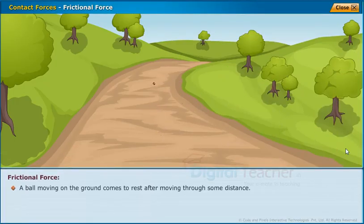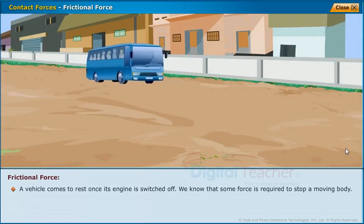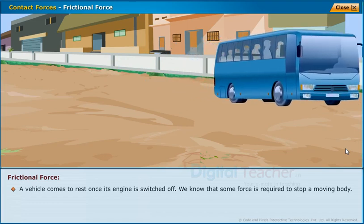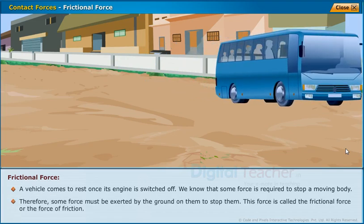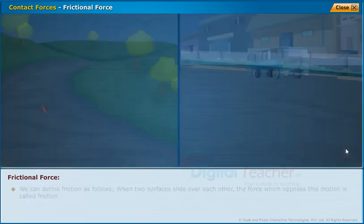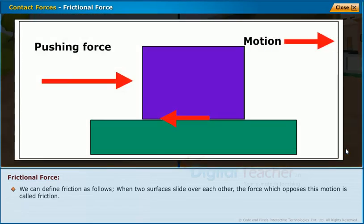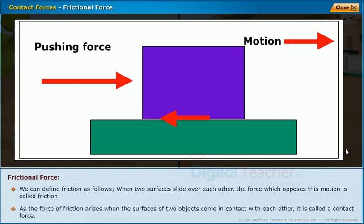A ball moving on the ground comes to rest after moving through some distance. A vehicle comes to rest once its engine is switched off. We know that some force is required to stop a moving body. Therefore, some force must be exerted by the ground on them to stop them. This force is called the frictional force or the force of friction. When two surfaces slide over each other, the force which opposes this motion is called friction. As the force of friction arises when the surfaces of two objects come in contact with each other, it is called a contact force.